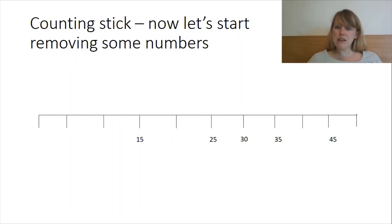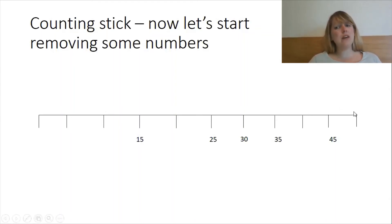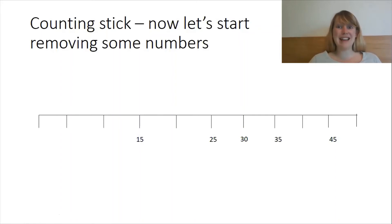What number did we just get rid of? That's right, 40. And half of 40 is 20. Half of 20 is 10. And half of 10 is 5. Well done. What goes at this end? 50. And what goes at this end? Zero. Well done. Are you ready to start counting again? Remember, follow the mouse and tell me the number that it lands on. 3, 2, 1.